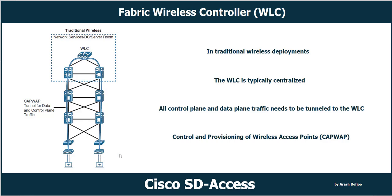In traditional wireless deployment, we have two tunnels between each AP and the wireless controller. Between the AP and wireless LAN controller, we have a control tunnel and also a data tunnel. Both are established with CAPWAP — Control and Provisioning of Wireless Access Points. One is for control plane traffic and the other for data plane traffic. All data traffic wirelessly received from the endpoint is tunneled to the wireless LAN controller, which then forwards it to the destination.